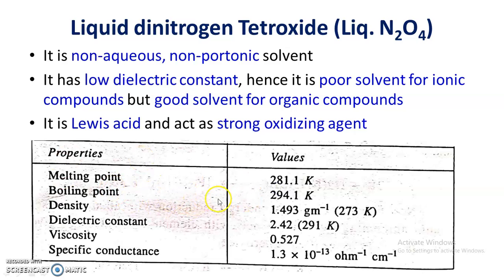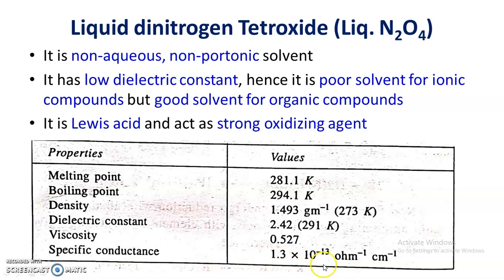These are some physical properties of dinitrogen tetroxide. In the solid state, its melting point is 281.1 Kelvin. The liquid boils at 294 Kelvin. Its density in the liquid state is 1.493. Its dielectric constant is 2.42, its viscosity is 0.527, and specific conductance is 1.3 × 10⁻³ per ohm per centimeter.